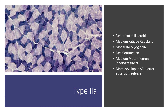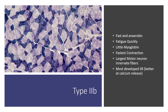Type 2A is still aerobic but a little bit faster; it fatigues a little quicker and has not as much myoglobin. It has a medium motor neuron innervating it and a slightly more developed sarcoplasmic reticulum, meaning it can process calcium a little bit faster. Then type 2B fibers are really fast, don't have much myoglobin, and therefore can't process as much oxygen, giving them a lighter color. However, they are innervated by the largest motor neurons due to their high force output, and they have a very developed sarcoplasmic reticulum to release and reuptake calcium at a very quick rate.